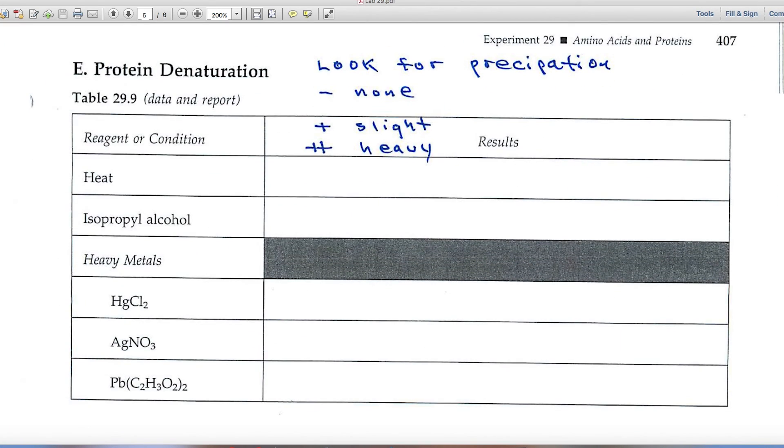Part E deals with protein denaturation. When proteins are denatured, they lose their three-dimensional structure and often precipitate. You see that, for example, when you cook an egg on a skillet. The protein solution precipitates and you get the white gelatinous mass.